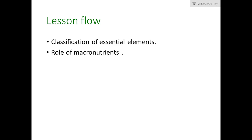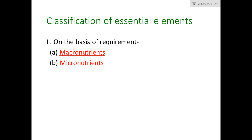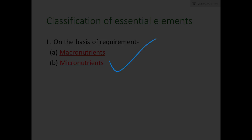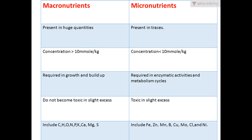In this lesson specifically we will be talking about the classification of essential elements and mainly the role of macronutrients. There are many types of classifications, but basically we'll be learning only two types. First is on the basis of requirement — in what quantity they are required by the plant — categorized into macronutrients and micronutrients. I have put up a table here explaining and comparing these points.